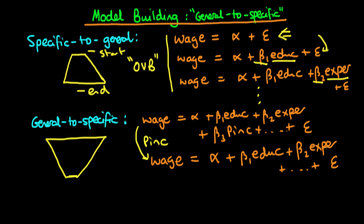Before proceeding to delete further variables, we check that the model still makes economic sense — verifying the signs and magnitudes of each variable's effects. Only then do we iteratively delete another variable if it is not statistically significant. We continue doing this until we arrive at a model which is relatively specific yet represents the underlying economics. When multiple variables are statistically insignificant simultaneously, a good approach is to delete those with the highest p-values first — that is, those which are the most statistically insignificant.